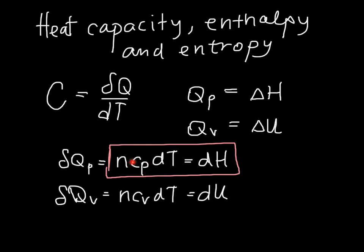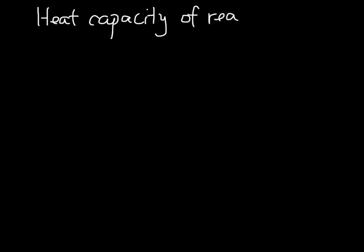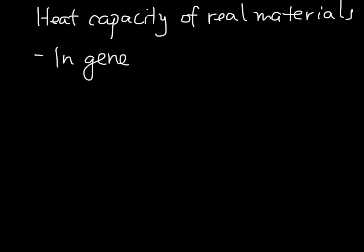Let's talk for a minute about what heat capacity really is. We saw that in ideal gas systems, heat capacity was a constant. In general, it's not a constant, so let's take a look at some real materials. Cp is a function of T — it's not a constant — and we can look at an example of that.